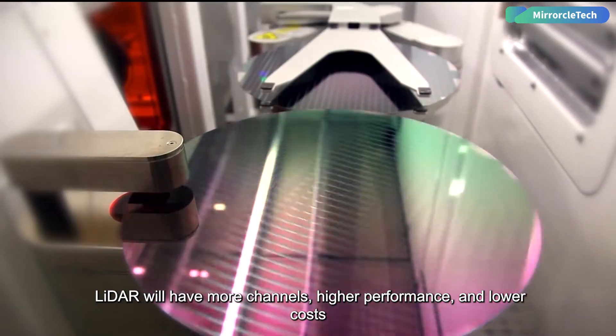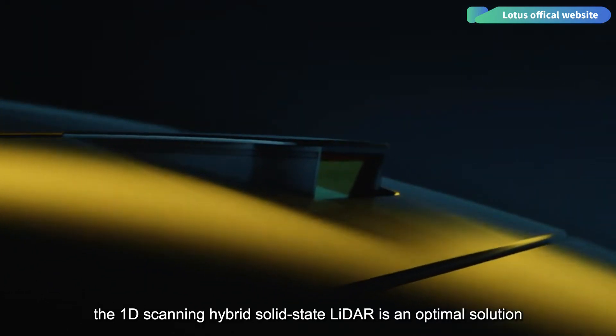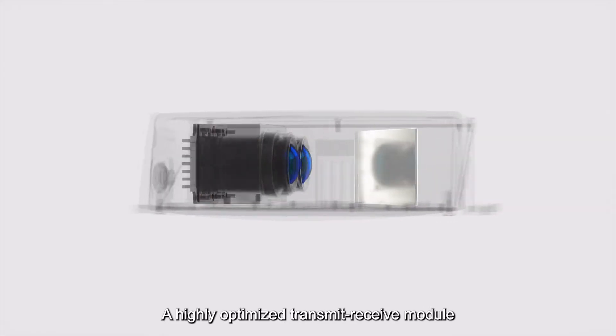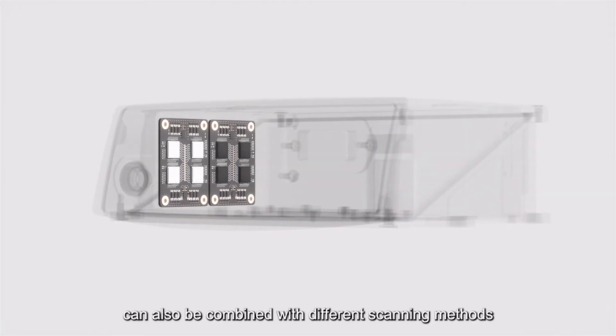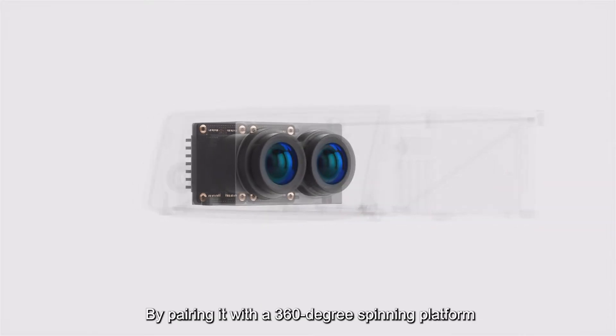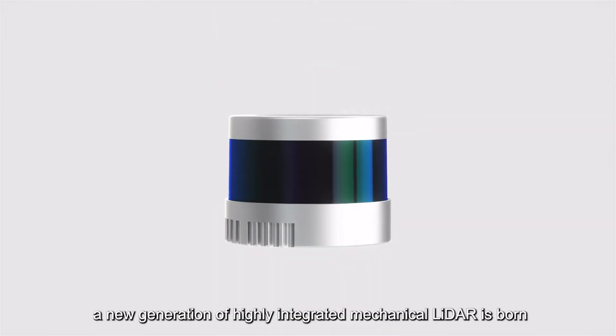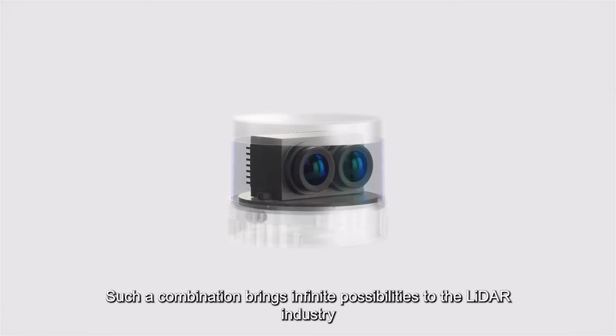From ASIC production vehicles, the 1D scanning hybrid solid-state LiDAR is an optimal solution. A highly optimized transmit-receive module can also be combined with different scanning methods. By pairing it with a 360-degree spinning platform, a new generation of highly integrated mechanical LiDAR is born. Such a combination brings infinite possibilities to the LiDAR industry.